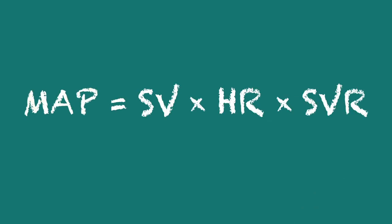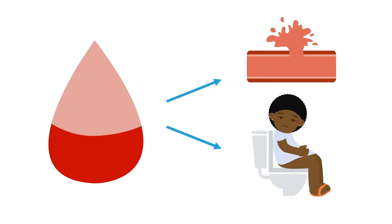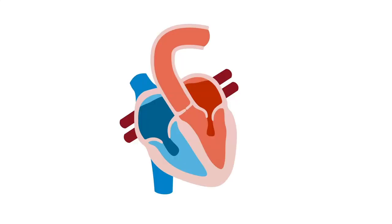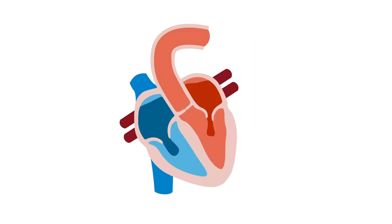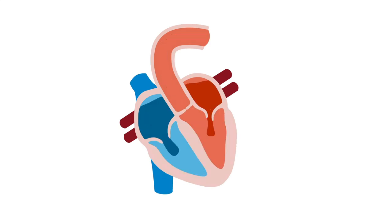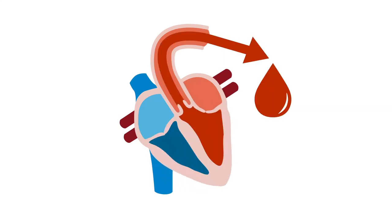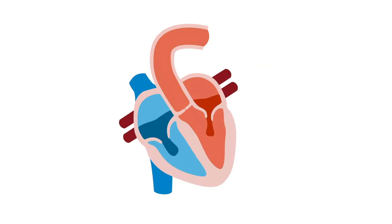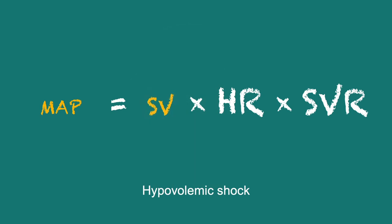Now let's look at what happens in hypovolemic shock. Again, MAP is low. But in this case, the primary insult is a decrease in blood volume, for example due to hemorrhage or massive diarrhea. If you imagine the heart is a pump, the less full of blood it is, the less it can pump out. So if we drop the blood volume in our circulation, that will eventually manifest as decreased filling of the pump, and therefore less blood pumped with each ventricular contraction. So the stroke volume is low.